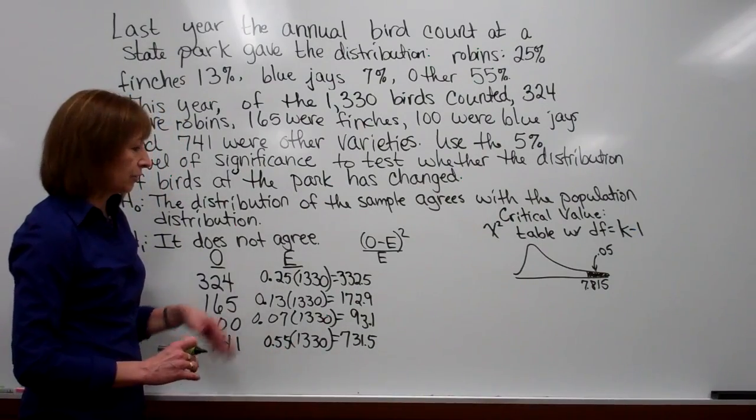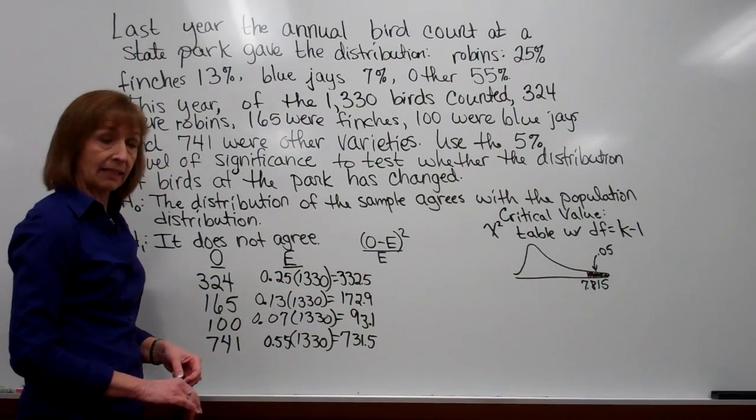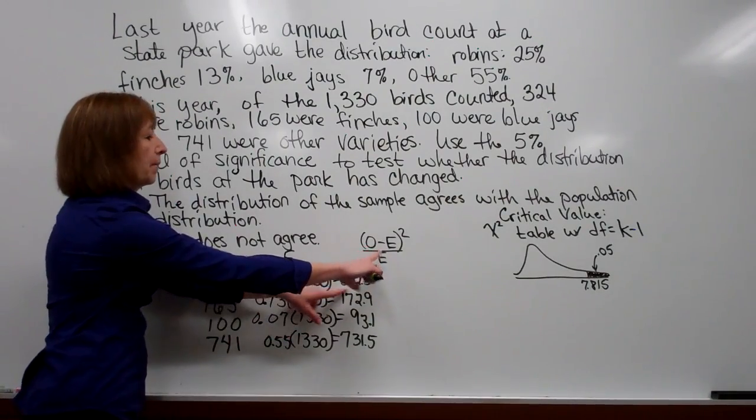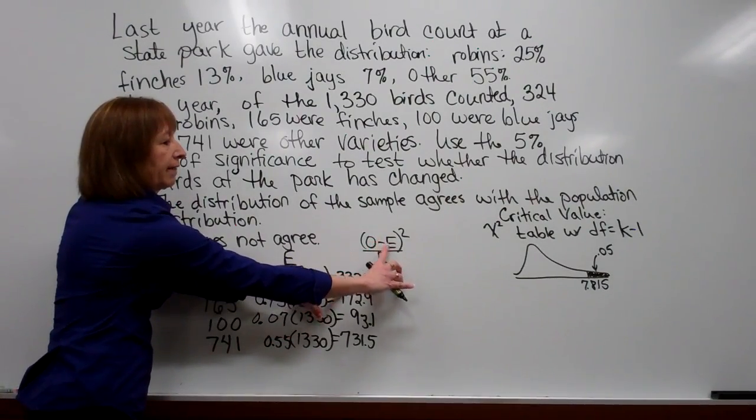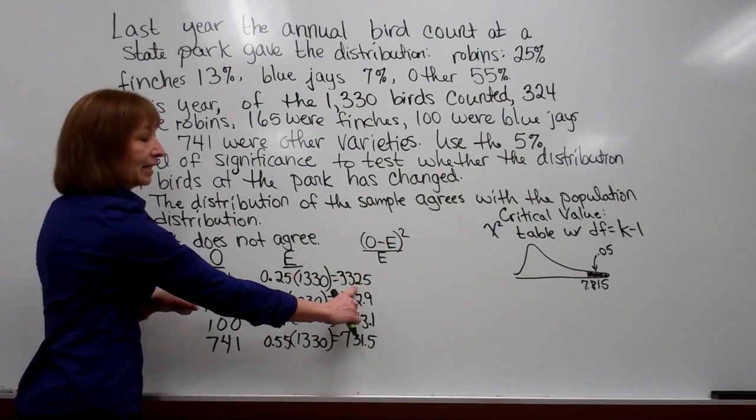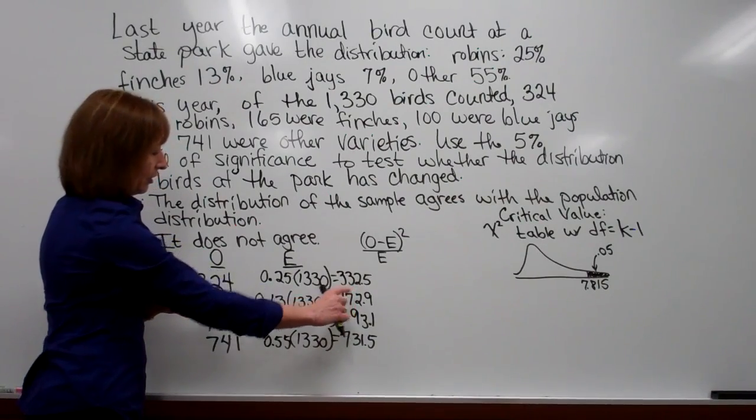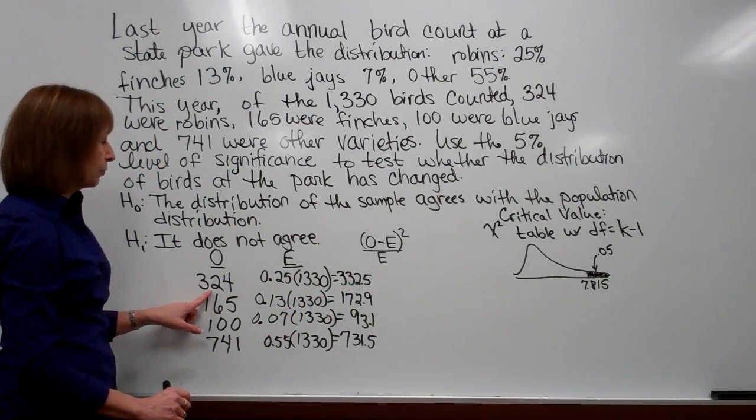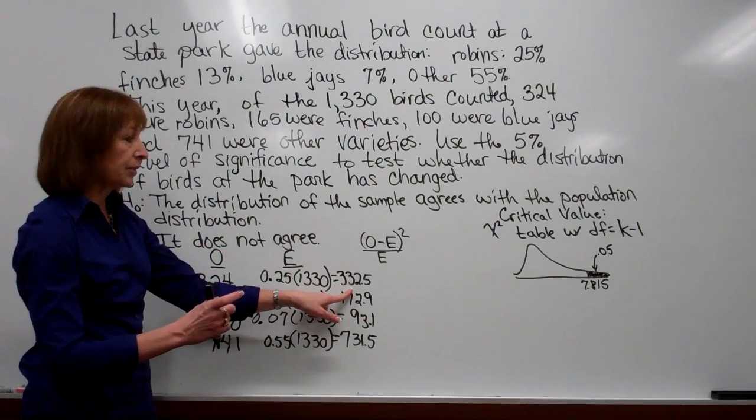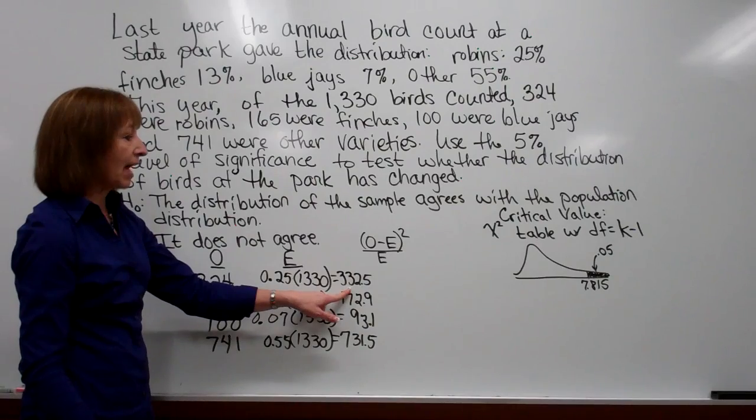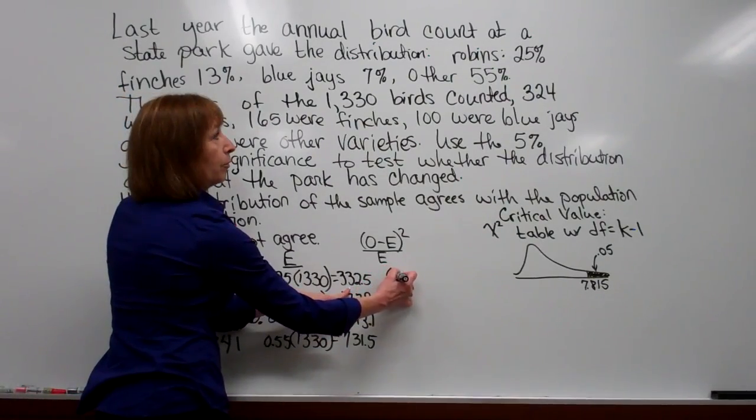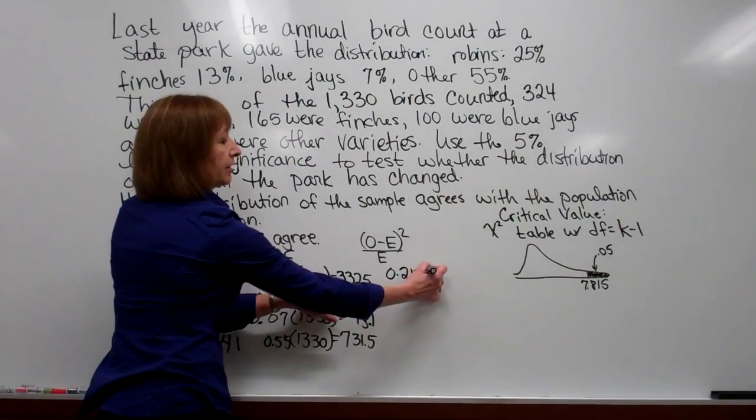So those are the ways that you go through and you calculate the expected. Now for each of these numbers we're going to take the observed number minus the expected number, get that difference and square it, and once we have that value we're going to divide it by the expected for that category. So when we take 324 minus 332.5, get our value and square it, and then divide by 332.5, you'll get 0.217293.